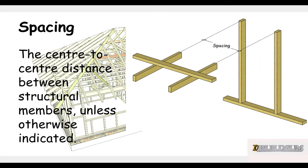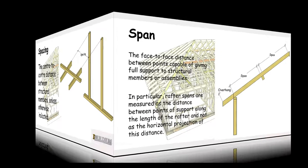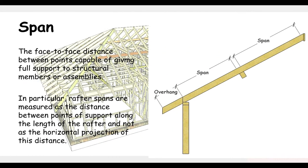Spacing is the centre-to-centre distance between structural members unless otherwise indicated. Span is the face-to-face distance between points capable of giving full support to structural members or assemblies. In particular, rafter spans are measured as the distance between points of support along the length of the rafter, and not the horizontal projection of this distance.